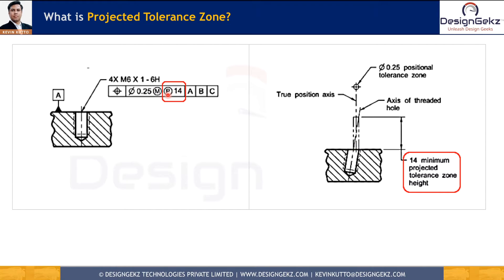If there were no P modifier, the tolerance zone would be located inside the material for the height of the hole, and the feature axis or axis of the unrelated actual mating envelope would have to be within that tolerance zone. Since the tolerance zone is now located above the surface, this is more stringent compared to when we don't have the P modifier in the feature control frame. This is needed only when the upper part thickness is more than the lower part thickness, as that is the only scenario where the bolt or pin can interfere with the clearance hole. As the upper part thickness increases, this problem can become more severe.